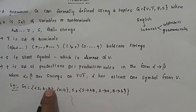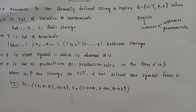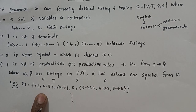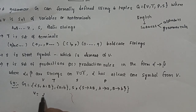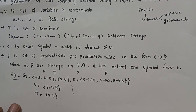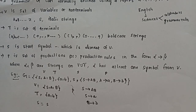For example, grammar G is the set of 4 tuples containing: V = {S, A, B}, T = {a, b}, S is the starting symbol, and production rules P: S tends to AB, A tends to a, B tends to b. So V is the set of non-terminals {S, A, B}, T is the set of terminals {a, b}, S is the starting symbol, and P contains the production rules S→AB, A→a, B→b.